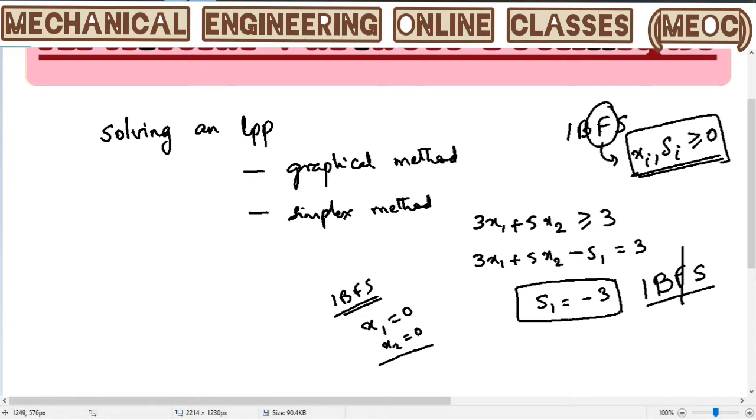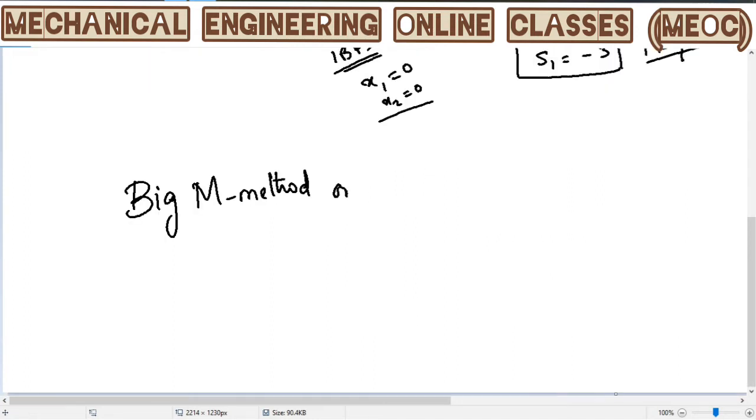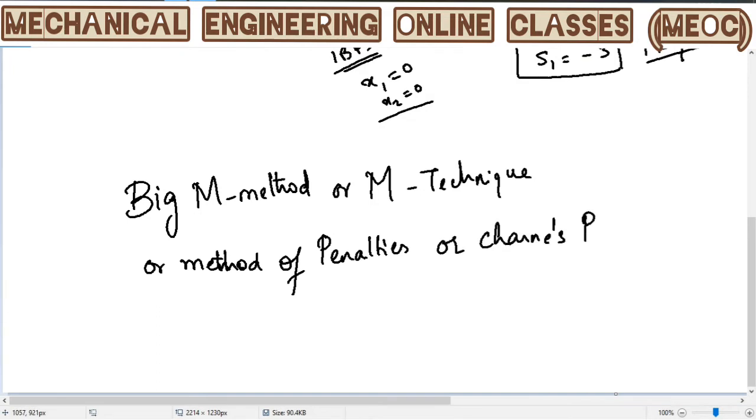In such cases, we may have to introduce an artificial variable, which will actually change the question. The given question will be changed. But still, we have to introduce them and see that, apply the concept of simplex, such that the final solution will not have those artificial variables. There are two such important methods. One is the big M method or simply called as an M technique, also called as method of penalties or chance penalty method.